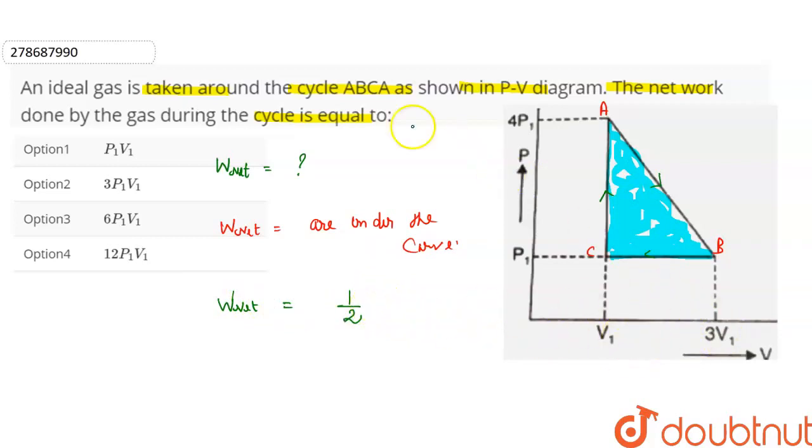So the width, here you can see, this width is going to be delta v into delta p. So if we talk about this, then we can write that network done is equal to 1 by 2, delta p into delta v.